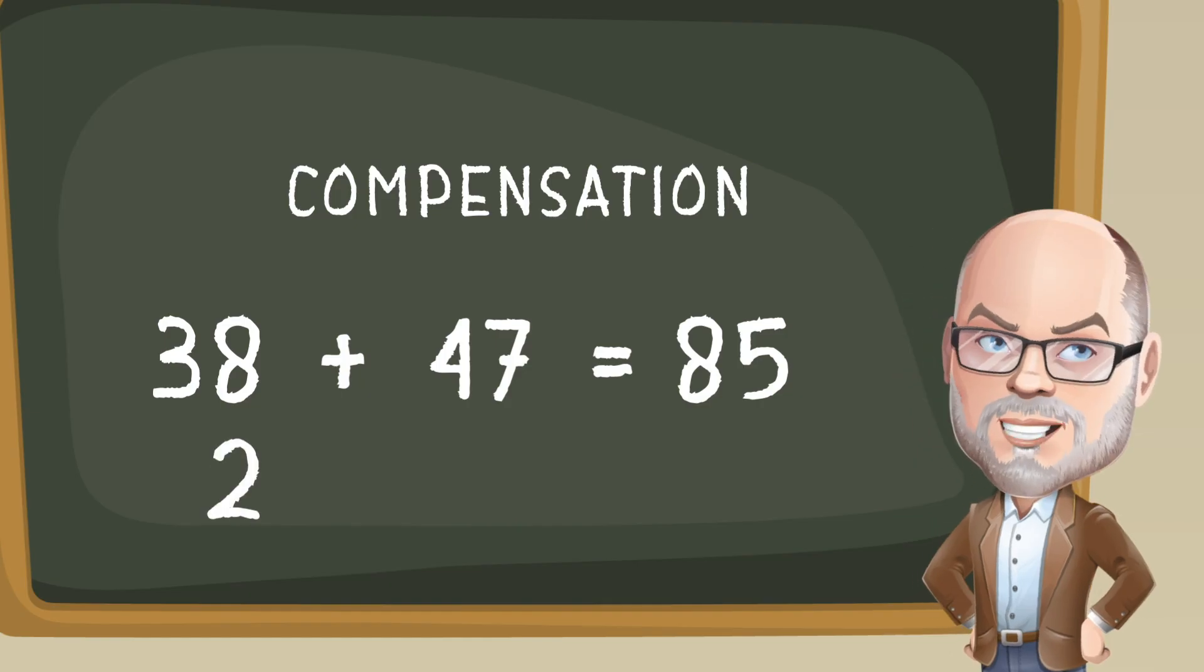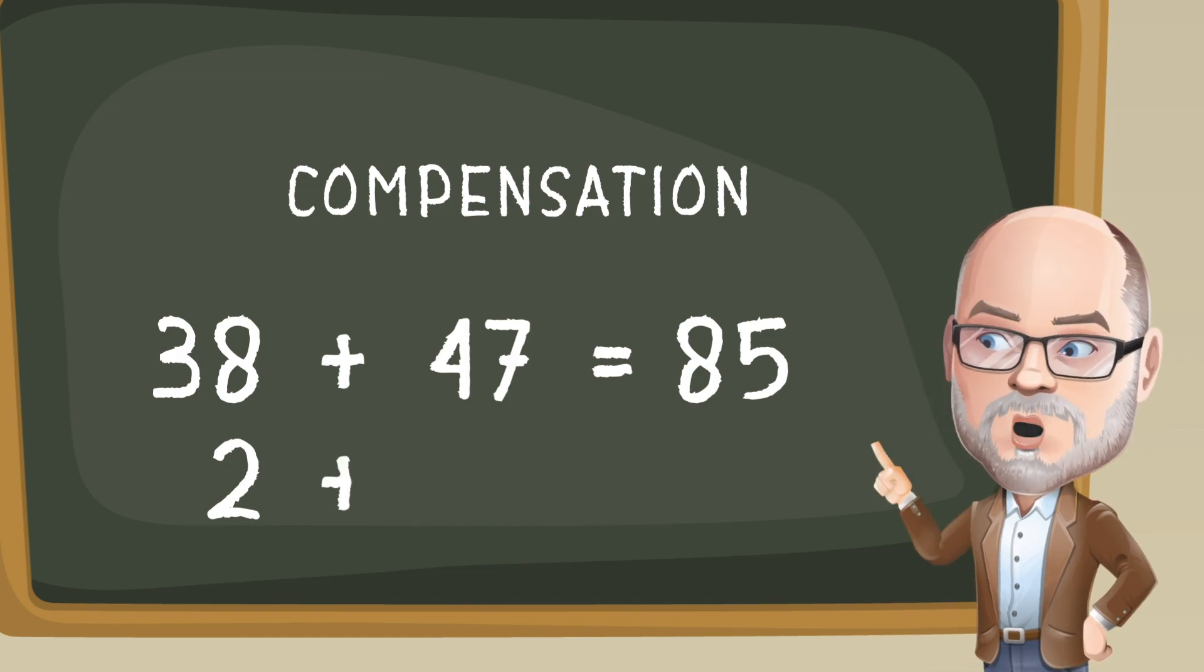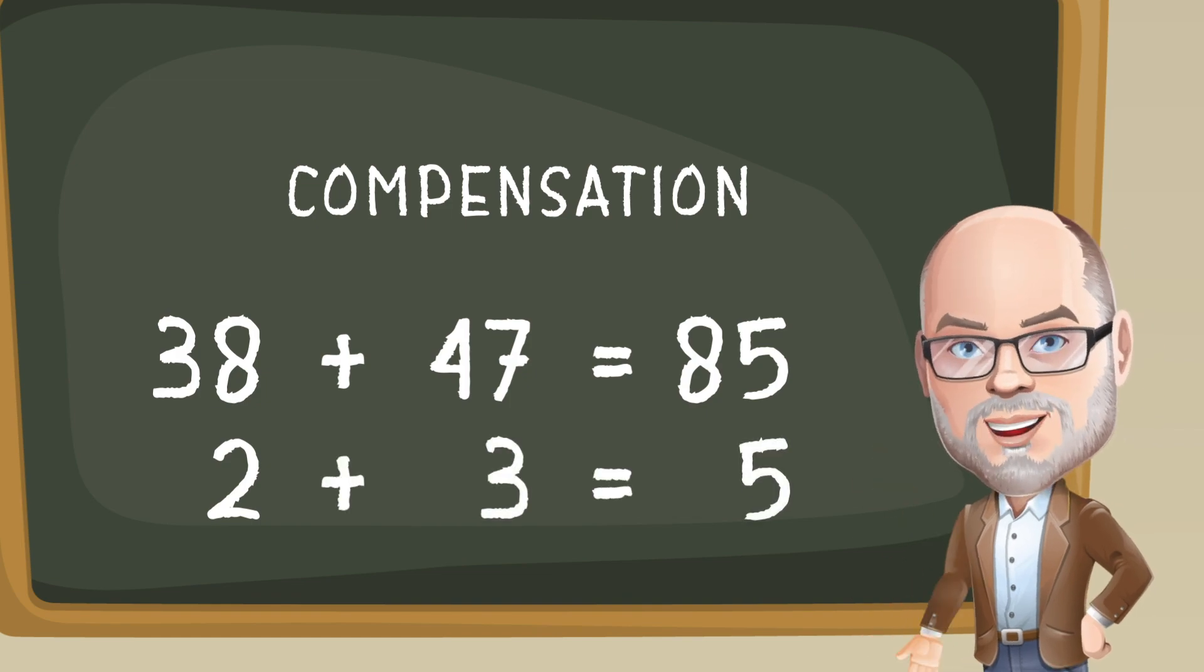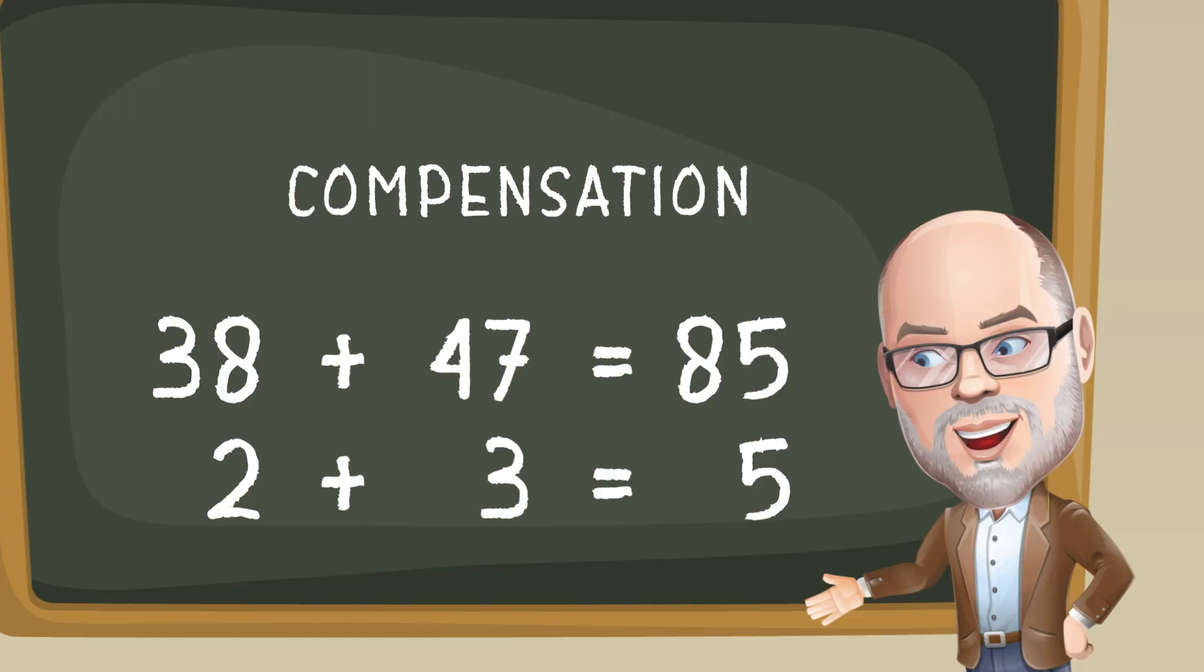Wait, are you wondering where the 5 came from? Well, we added 2 to 38. That 2 plus the 3 we added to 47 makes 5. Therefore 90 was 5 too much, so we had to take that 5 back off.